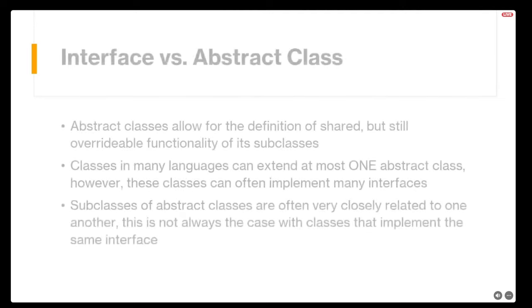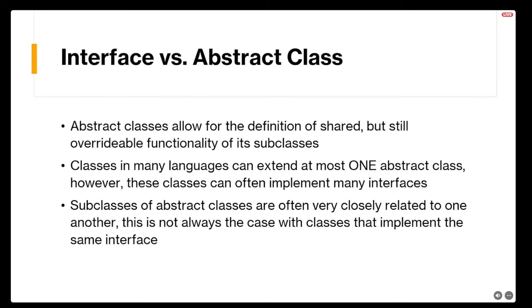Now let's discuss interface versus abstract class, since they can sound similar at a glance. Interfaces don't and can't tell an object how to actually do the things — the business logic — they define. Abstract classes do allow for the definition of shared but still overridable functionality in their subclasses. You can actually write method logic if every subclass extending your abstract class shares a particular functionality — like a get name and set name — and you don't need to write them in every concrete implementation.